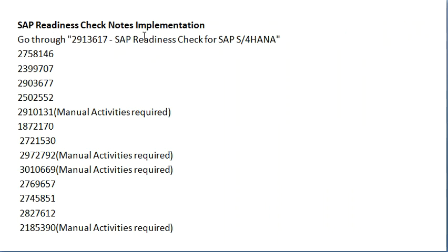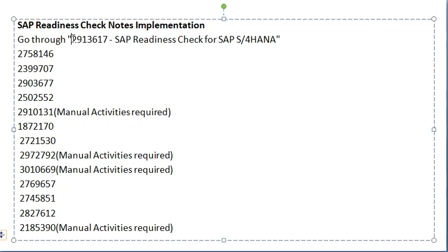For conducting the Readiness Check, we need to implement the nodes. The main node for SAP Readiness Check contains all the required sub-nodes. For conducting the Readiness Check, we have to implement all these nodes. Wherever manual activities are present, we have to take the developer's help to complete those manual activities.